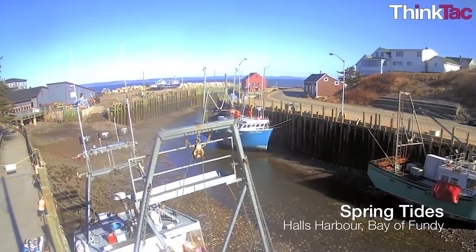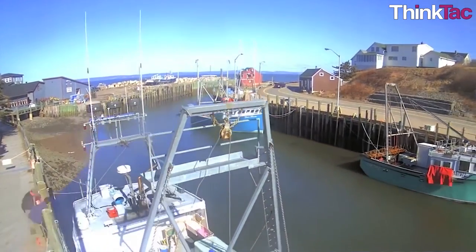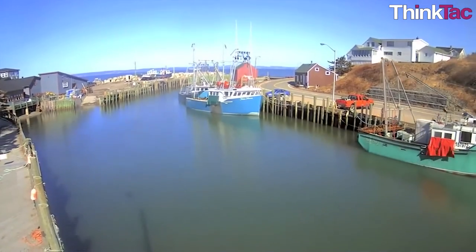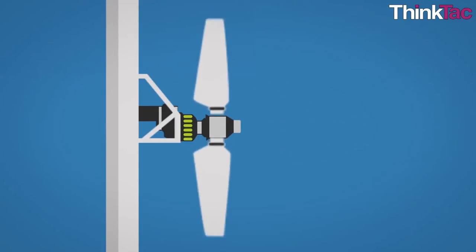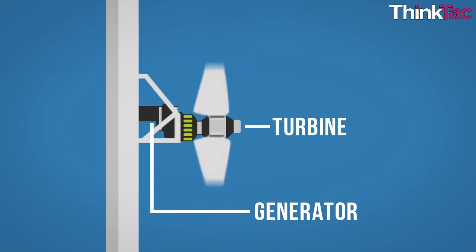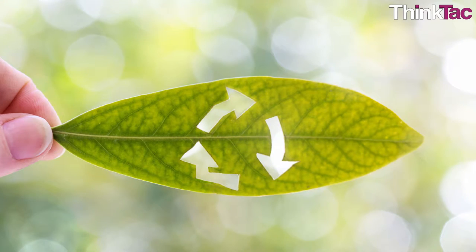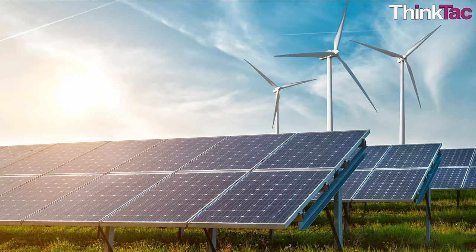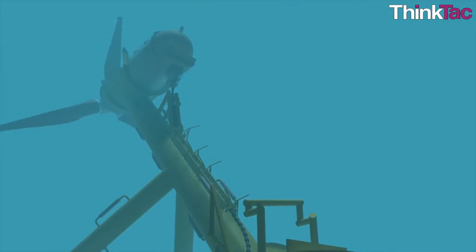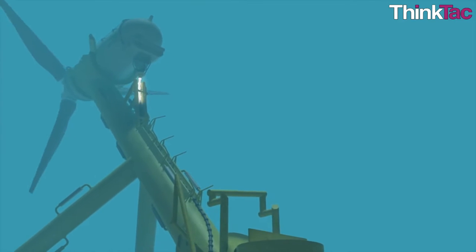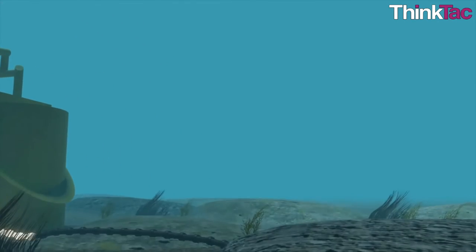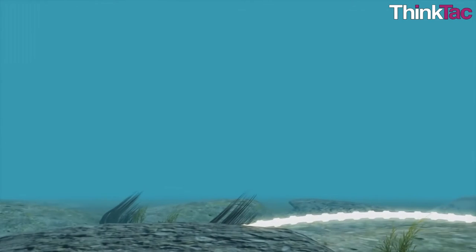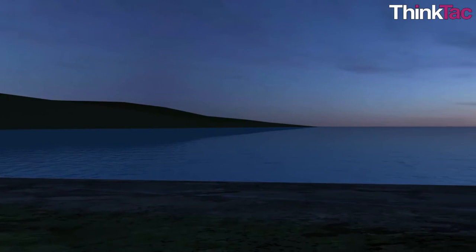This model of a tidal turbine shows how the ebbing and surging of ocean tides can be used to turn turbines, which can be used to produce electrical energy in a clean way — that is, from a renewable resource of energy. Harnessing tidal energy in power generation plants is still in its infancy, but it holds a lot of potential because of the large size of oceans.